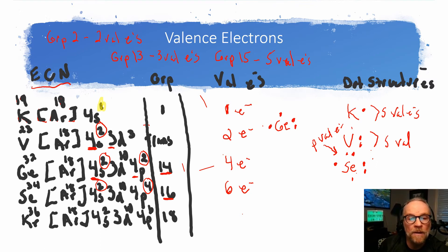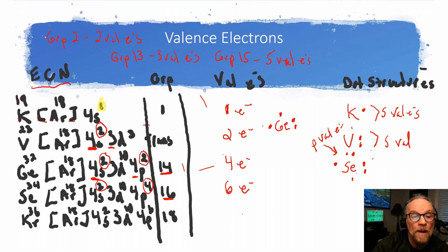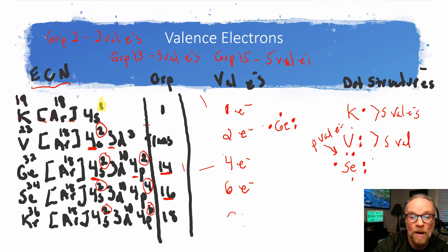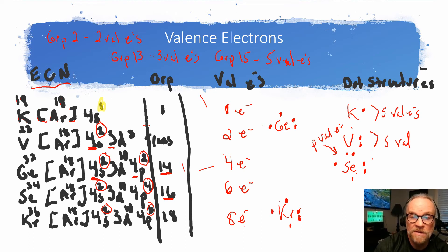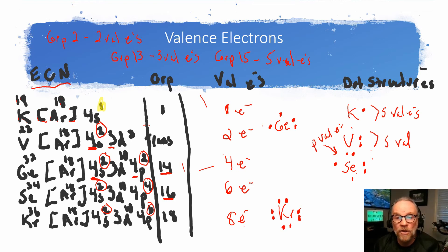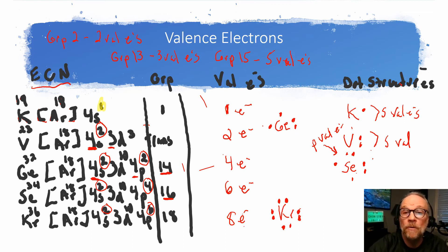Finally, krypton has a full outermost shell — it's in the noble gas group. Six plus two equals eight, so it has a full set of eight valence electrons. Writing krypton's dot structure: the s valence electrons go to the right, then three, four, five, six, seven, and eight dots placed around the symbol. Group 17, which we skipped, would have seven valence electrons.